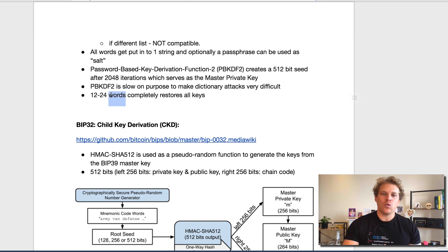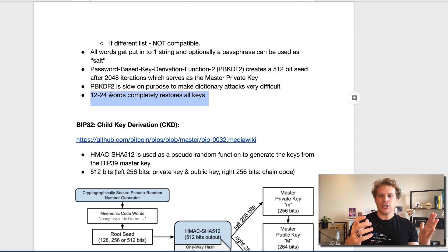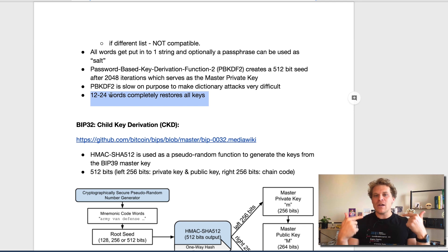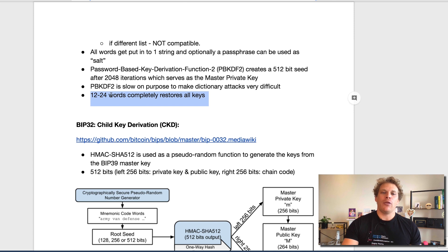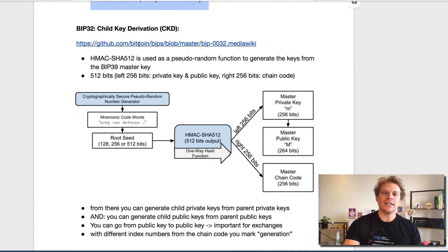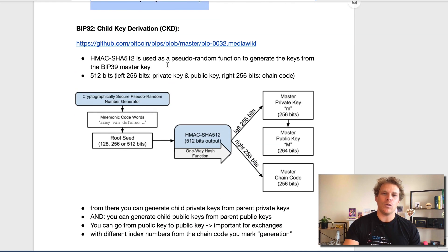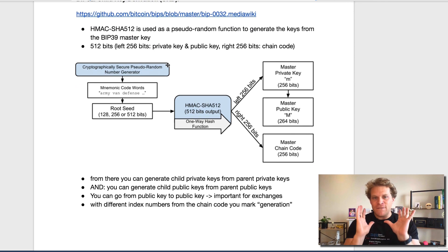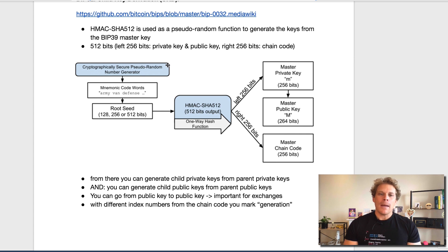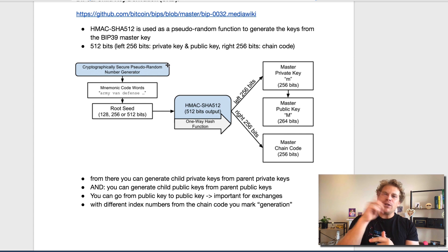Always remember: the 12 or 24 words can completely restore the keys because it's basically a function where you plug it in and it gets pushed through. So this is BIP39, and now let's go to the next step that was also integrated into getting HD wallets. That's BIP32, and that's basically the child key derivation. Here we use a very pseudorandom function — a very special function — and that is the HMAC SHA-512. We're going to look into how this actually works because it allows us to generate keys from the BIP39 master key that we just generated.